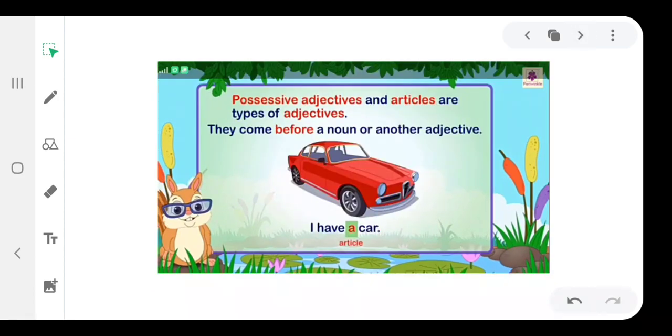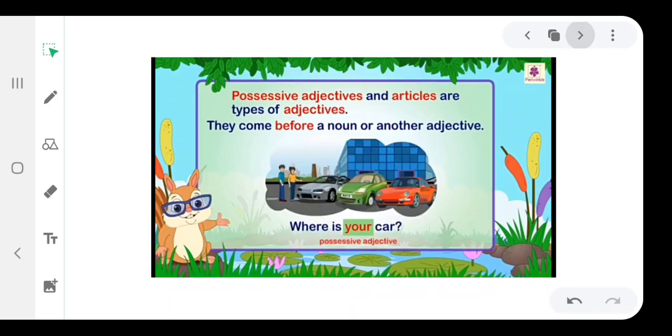Possessive adjectives and articles are types of adjectives. They come before a noun or another adjective. For example, I have a car. Here, 'a' is used as an article. Where is your car? In this case, 'your' is used as a possessive adjective.